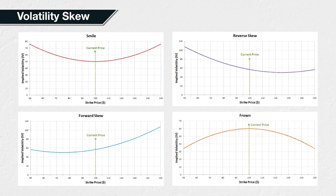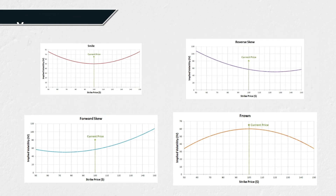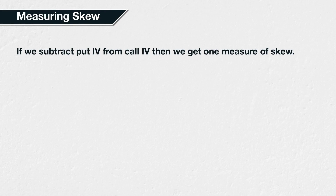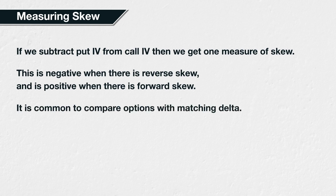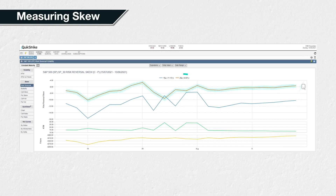These different shapes are not fixed, so it is useful to track the skew over time. A common way to measure skew is to subtract the implied volatility of puts from the implied volatility of calls. This results in a negative number when there is a reverse skew shape to the curve, and results in a positive number when there is a forward skew shape to the curve. When making this comparison, it is common to use the delta of the options, rather than the numerical distance from the strike price, to choose the specific options to compare. For example, you may see a chart showing the 25-delta skew of an asset.